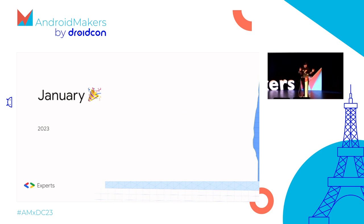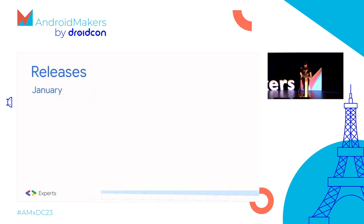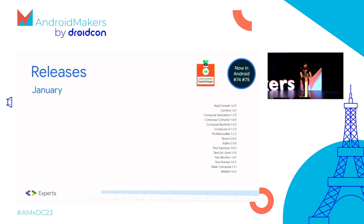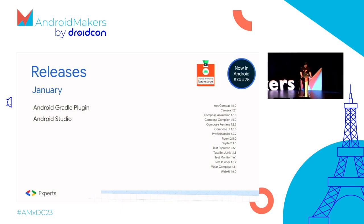Starting in 2023 — happy new year! The Android text team joined Android Developers Backstage to discuss text. We've got Android Gradle Plugin 7.4.0, Android Studio Electric Eel Stable — another stable release, the last one was in September — Flamingo Beta 1 and Giraffe Canary 2. JetBrains released Kotlin 1.8 with standard library updates, and Google released the first public version of the Extension SDK. Also GitHub releases CLI 2.2.0 with extension discovery.